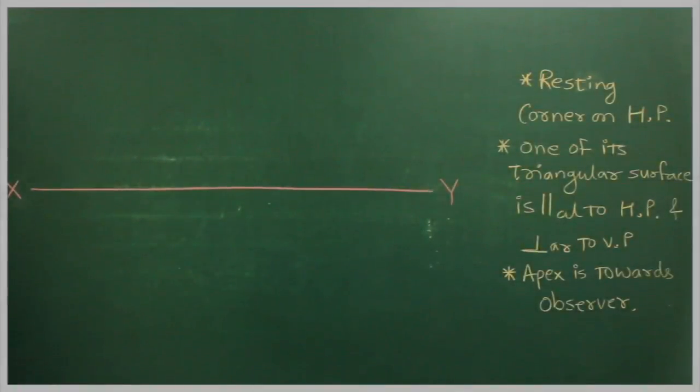In this sum, it is resting on one of its corner on HP, and one of its triangular surfaces is parallel to HP and perpendicular to VP, and apex is towards observer.